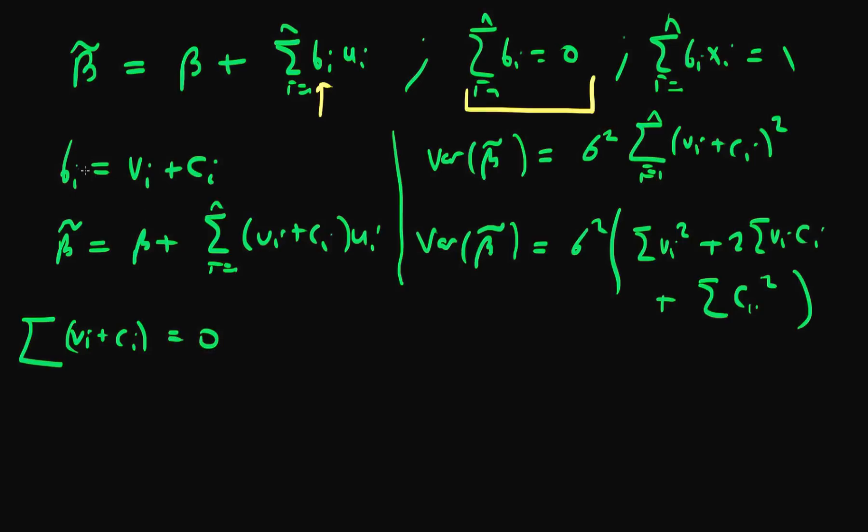I've just used the expression that bi equals vi plus ci. And again this is summing from i equals 1 to n.